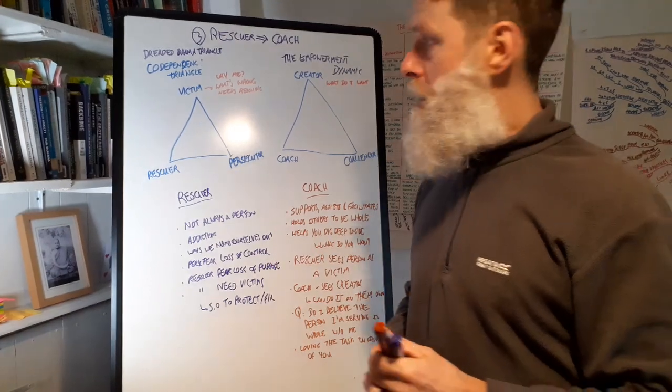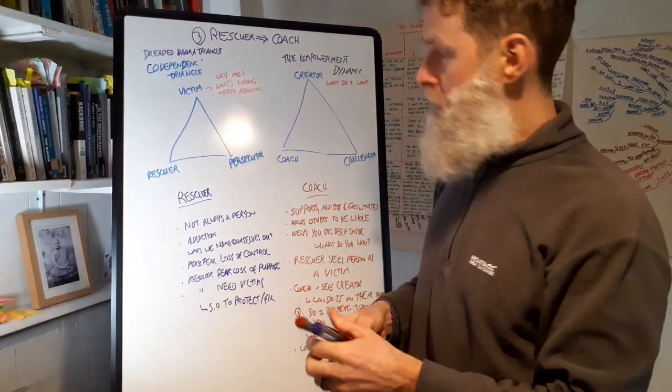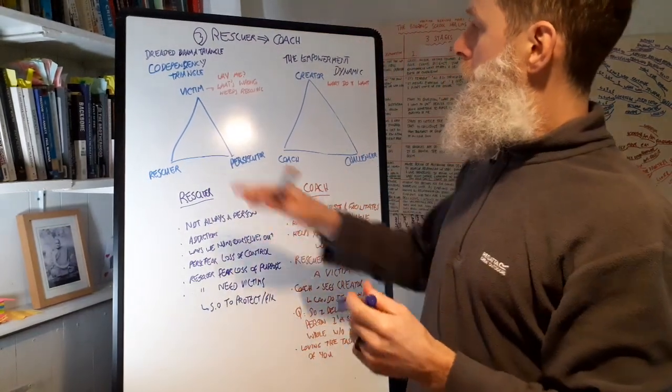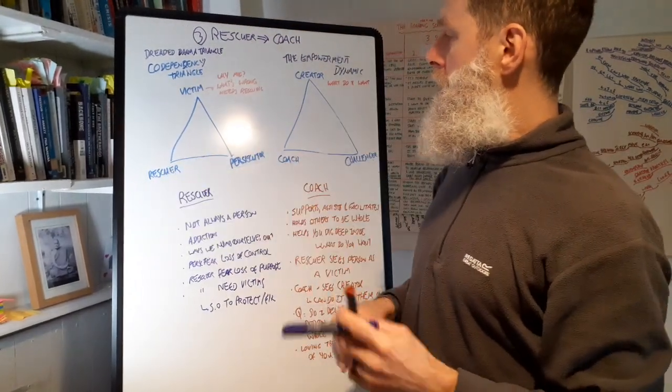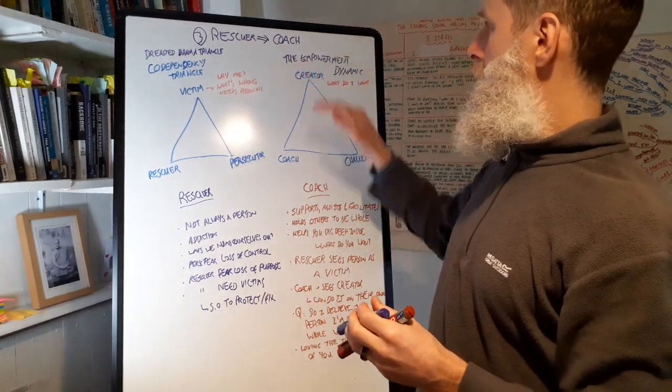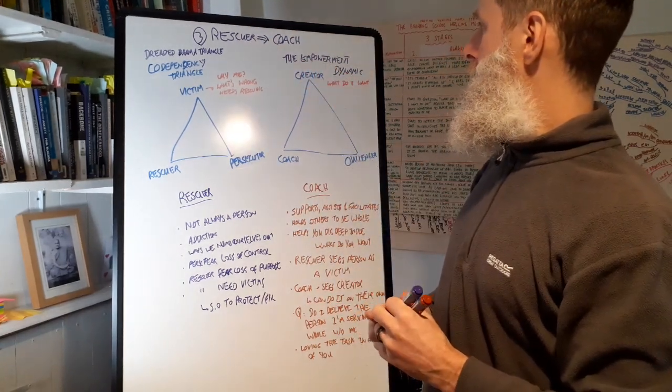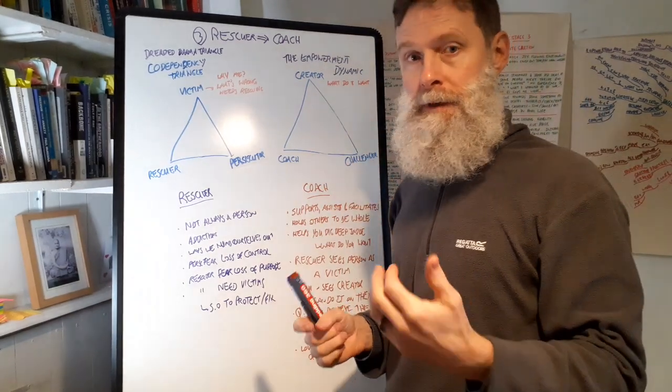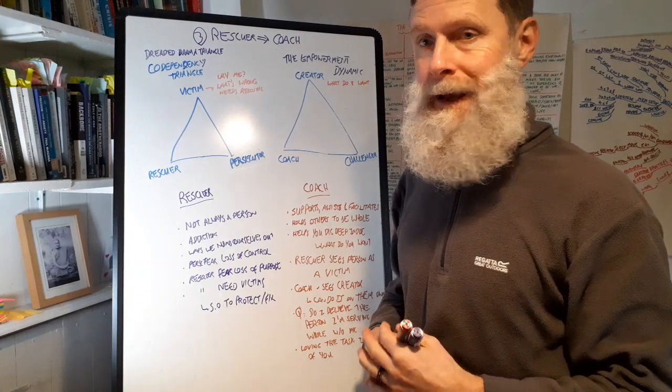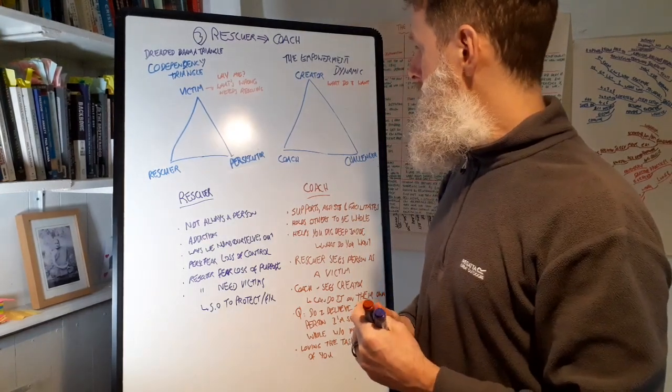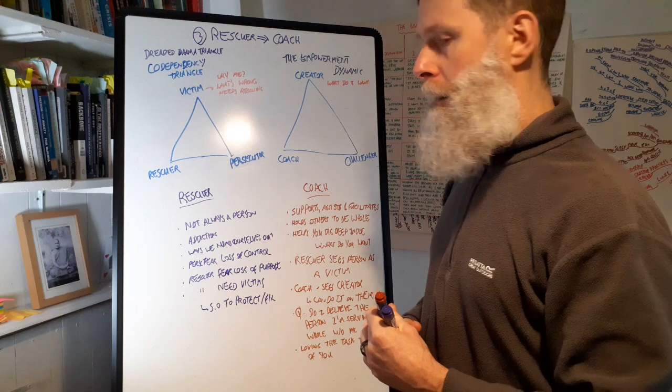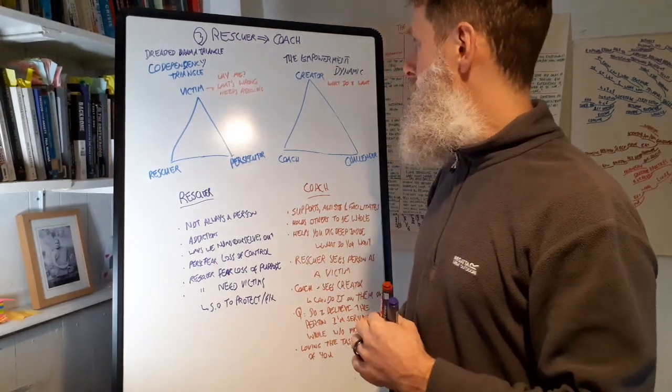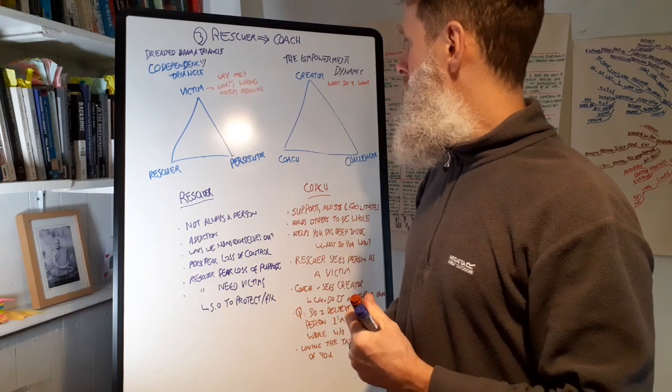So as I've mentioned before, you've got this codependency triangle here: victim, persecutor, rescuer. And then on the flip side, we've got the empowerment dynamic, which is the creator, the challenger and the coach. And this comes from the teachings of David Emerald and the empowerment dynamic.